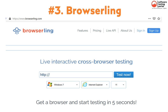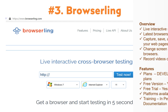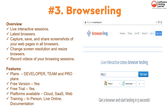BrowserLink is the third tool in our list. BrowserLink has live interactive sessions and the latest browsers. It captures, saves, and shares screenshots of your web pages in all browsers. Features include: changing screen resolution and resizing browsers, recording videos of browsing sessions, developer team and pro plans, free trial, available on cloud SaaS web — with training available in-person, live online, and via documentation.